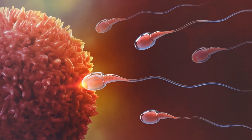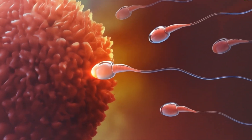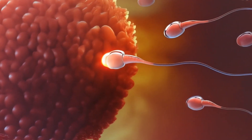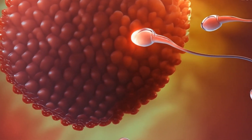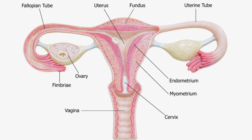Fertilization is the process by which a sperm connects to an egg, forming a zygote. This usually occurs in the fallopian tube. The zygote contains all the genetic information necessary for the development of a new organism.